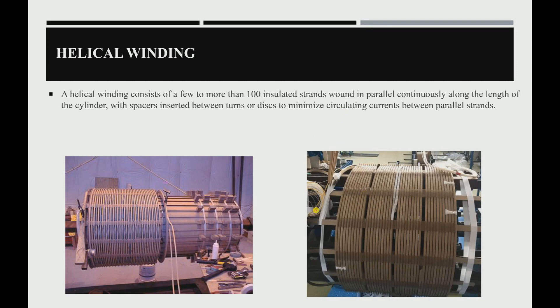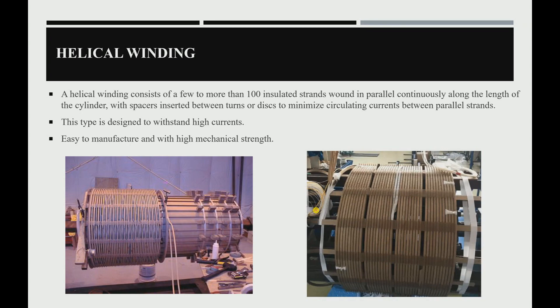This type of winding formation is used when we have large or high currents — that is, low voltage and high current conditions. We use this helical winding formation because it is easy to manufacture with high mechanical strength. The biggest problem, however, is that we will have a large transformer